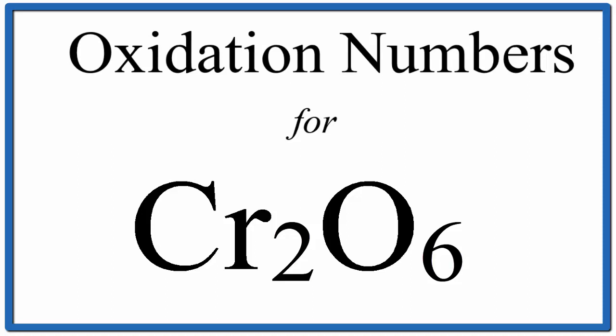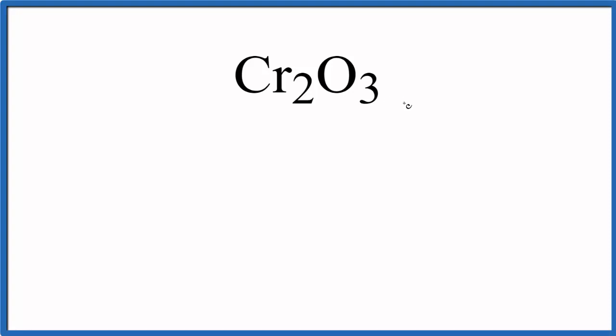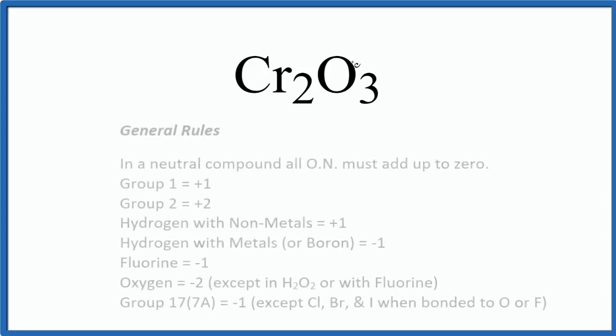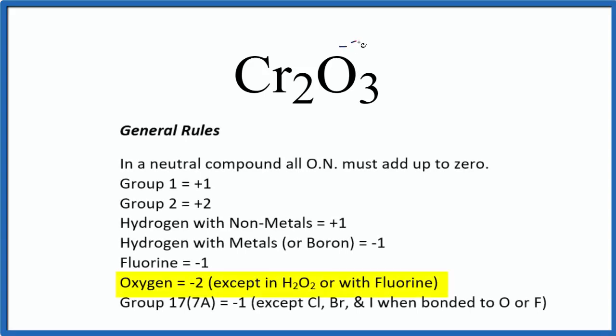In this video we'll find the oxidation number for the chromium in Cr₂O₃, chromium(III) oxide. We know that if we add the oxidation numbers up for each element in Cr₂O₃, it's going to equal zero. We also know that oxygen is normally a -2, there are a few exceptions.